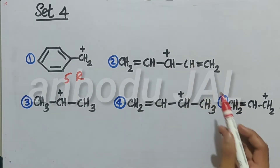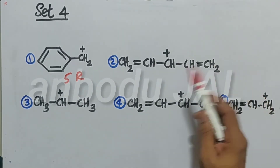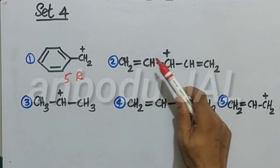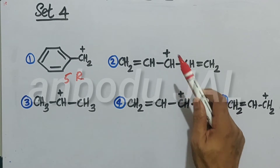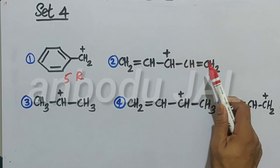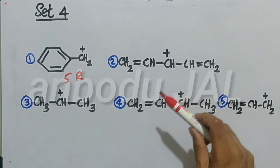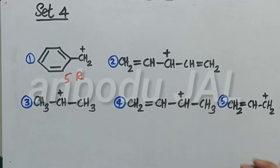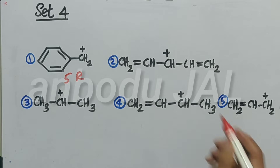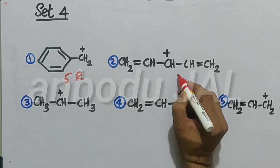Here also, conjugation from two sides — double, single, plus, plus, single, double. That is, four resonance structures are possible in this case.